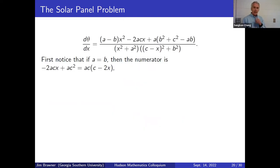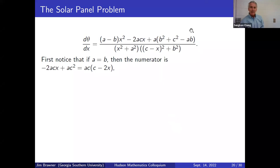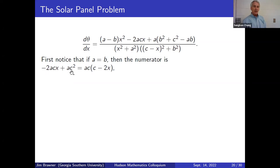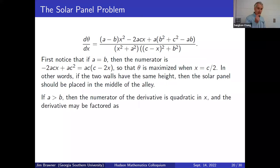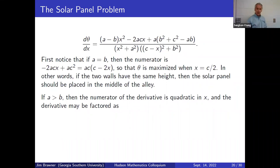If A equals B, the leading coefficient vanishes and the numerator reduces to a simple expression giving x = C/2 — you put the solar panel exactly in the middle, which makes intuitive sense. If A is greater than B, we have a genuine quadratic in x, which is more interesting. We introduce a variable T = √(AB · [(A−B)² + C²]) to factor the numerator neatly.